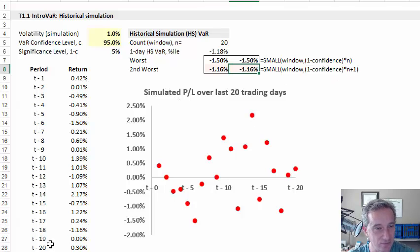And that means that if we have 20 returns, we're retrieving not the worst return, but the second worst return, which in this case happens to be over here at T minus 18, or negative 1.16%.